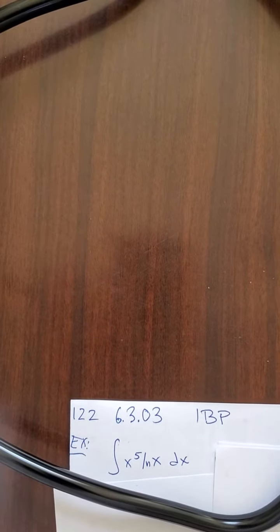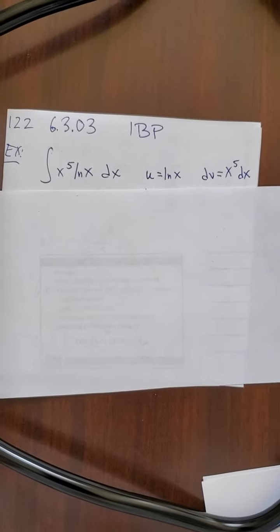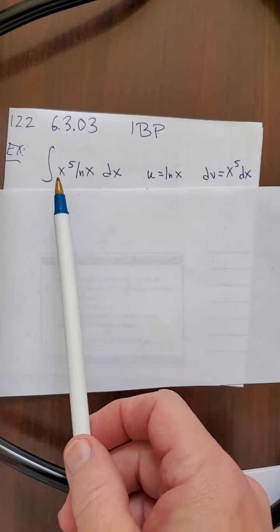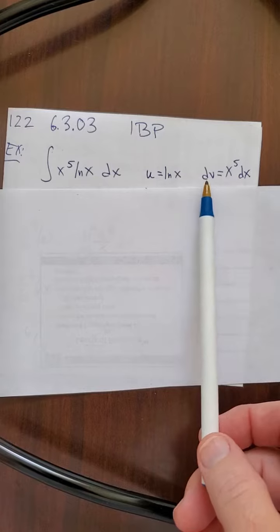Let's look now at another example of integration by parts. I'm going to pick ln x as my u, and x to the 5th dx as my dv.